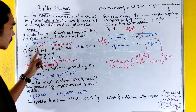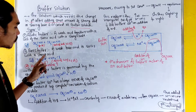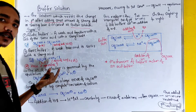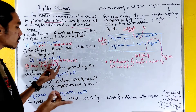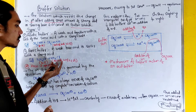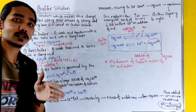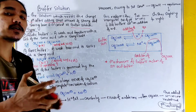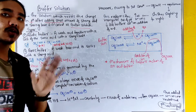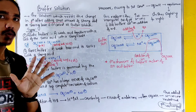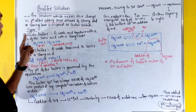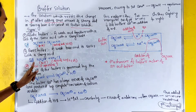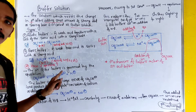For the basic buffer, we need a weak base. A basic buffer consists of a weak base plus a salt of that weak base with a strong acid. We can use acidic buffers and basic buffers in the same way.